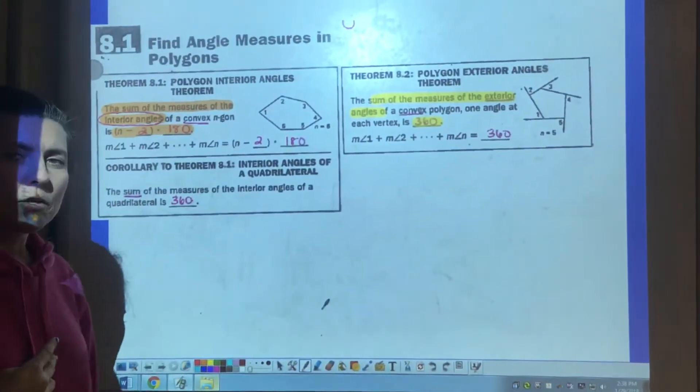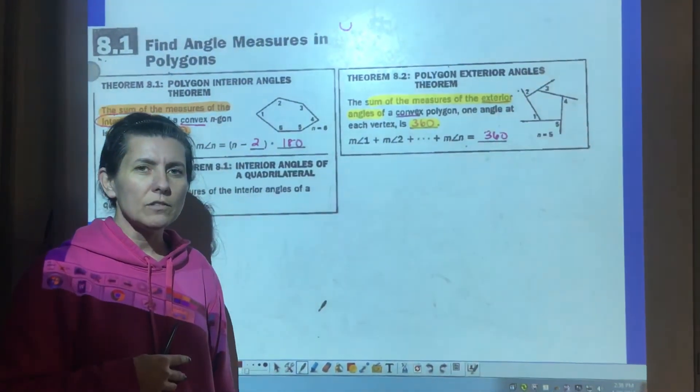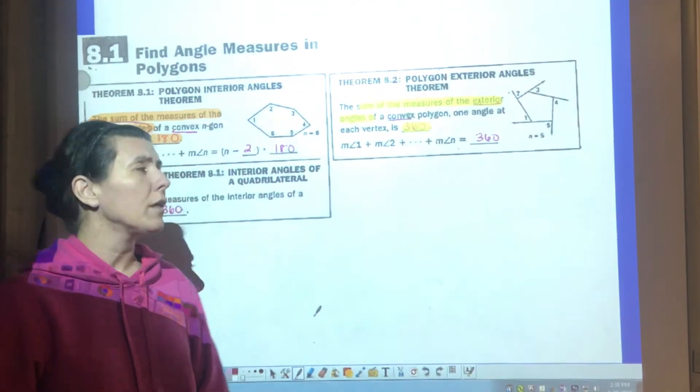So today's 8.1, we're beginning chapter 8, all about polygons and the characteristics of polygons. Today we're going to concentrate on the measures of the inside and the outside of polygons.